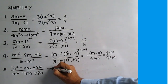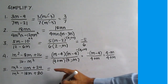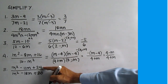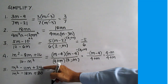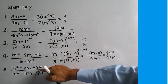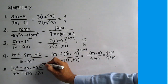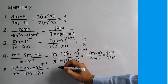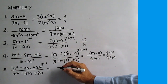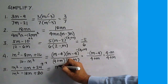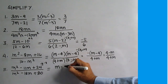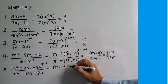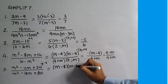Number 5. This is a general trinomial. Think of two numbers that will give you a product of 24 and a sum of negative 11: negative 8 and negative 3. The factors are M minus 8 and M minus 3.